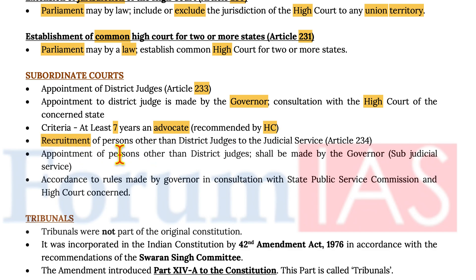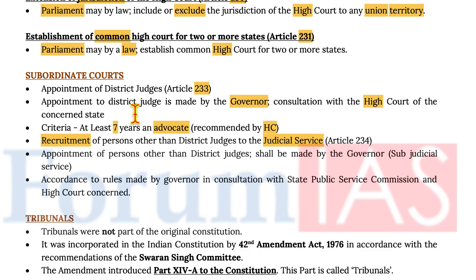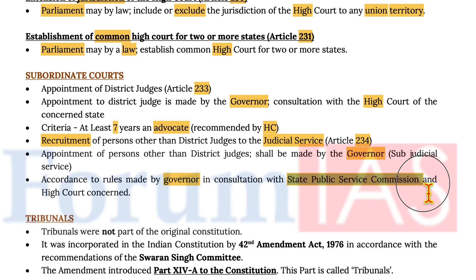The recruitment of persons other than district judges to the judicial service can also appoint district judges under Article 234. Appointment of persons other than district judge shall be made by the governor for sub-judicial services in accordance with the rules made by the governor in consultation with the state public service commission and the high court concerned.